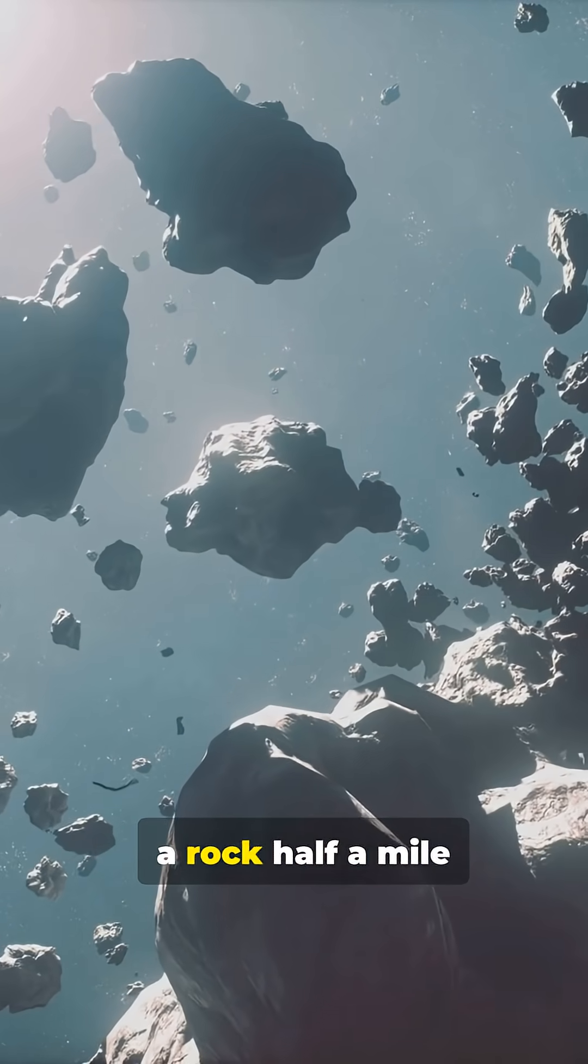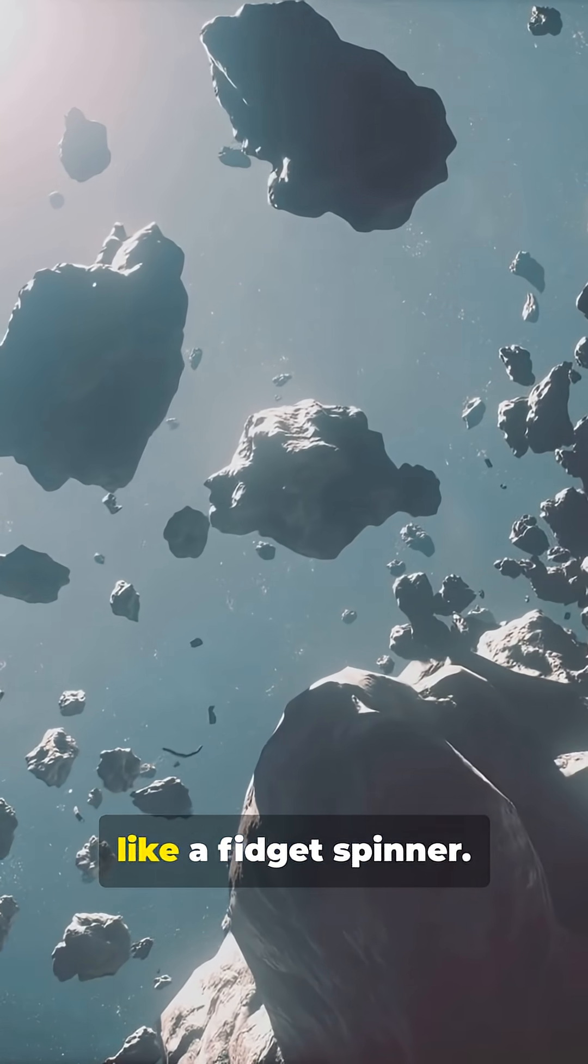Quick space trivia. A rock half a mile wide is whirling like a fidget spinner.